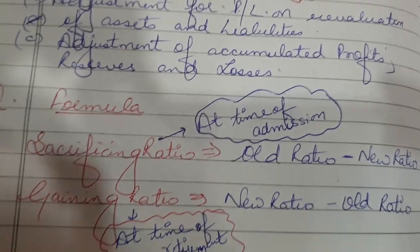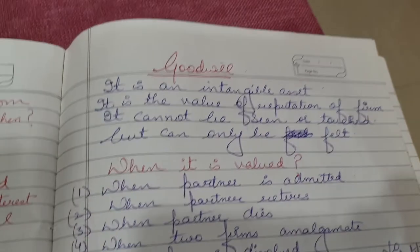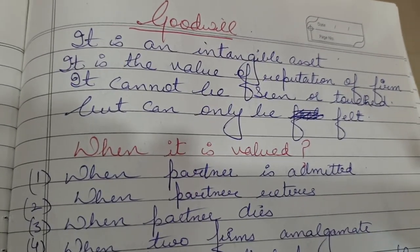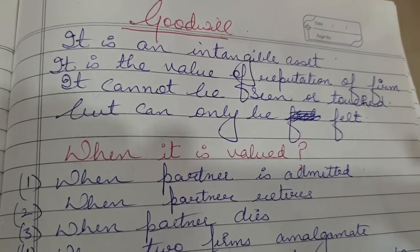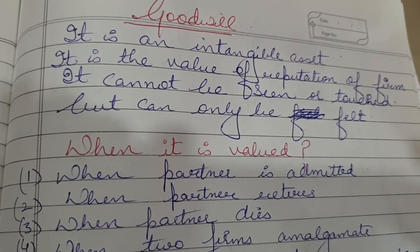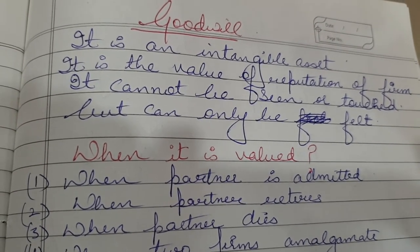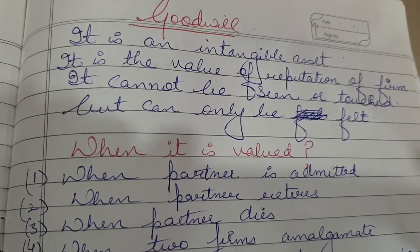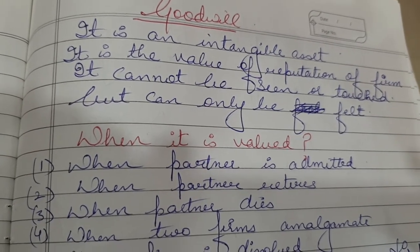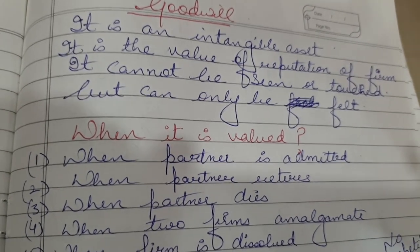What is goodwill, and which type of asset is it? Goodwill is an intangible asset. It is the value of the reputation of a firm — the reputation that we cannot see or touch, but can only be felt.